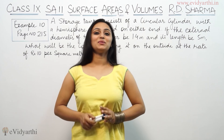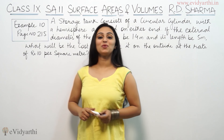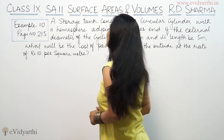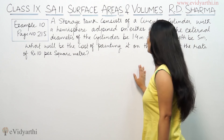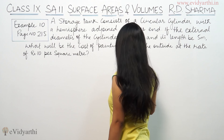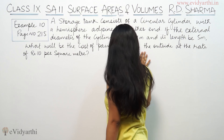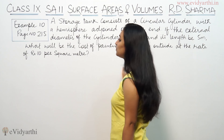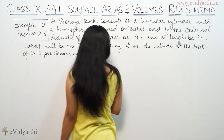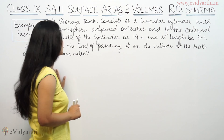Hi, this is Khushku with another question of surface areas and volumes. This is example 10 from page 215 of Adi Sharma. It says a storage tank consists of a circular cylinder with hemispherical joints at either end. If the external diameter of the cylinder is 1.4 meters and the length is 5 meters, what will be the cost of painting it on the outside at the rate of rupees 10 per square meter?